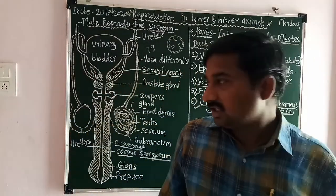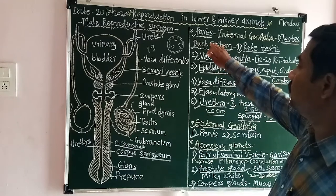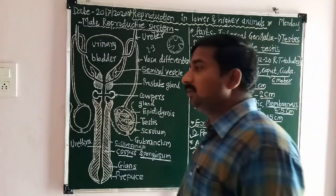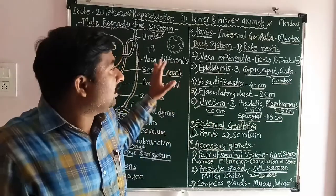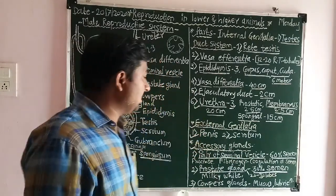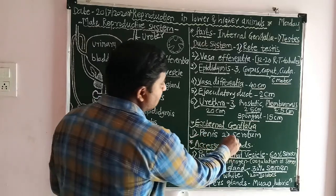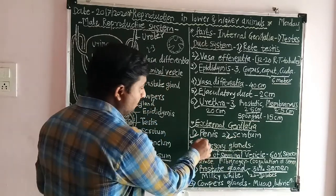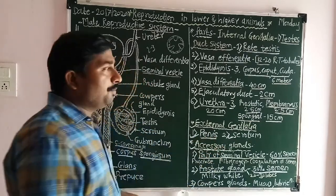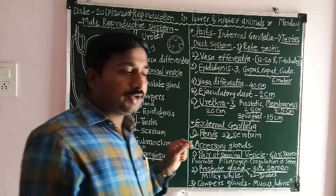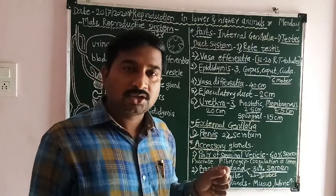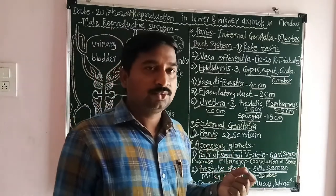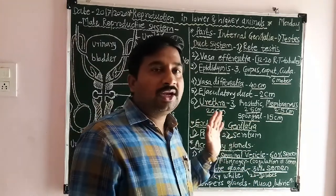That opening is called the urethral orifice or urethral meatus, and it conducts both urine and semen. That is the function of the urethra. The next part is the external genitalia.